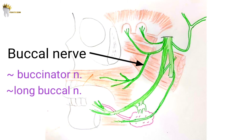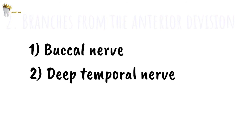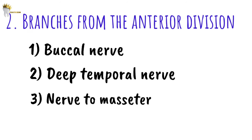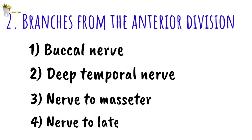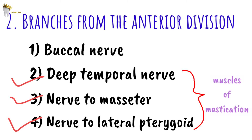The other three branches from the anterior division are the deep temporal nerve, the nerve to the masseter muscle, and the nerve to the lateral pterygoid muscle. These nerves provide motor innervation to the respective muscles. So three out of four branches from the anterior division are to the muscles of mastication.